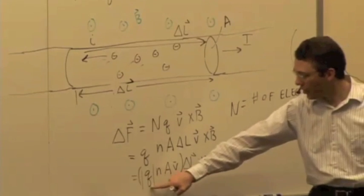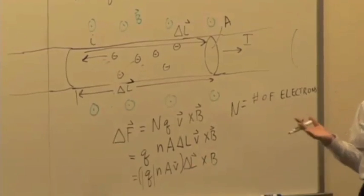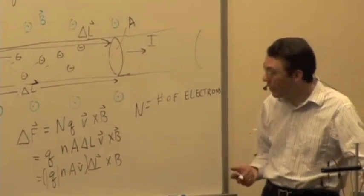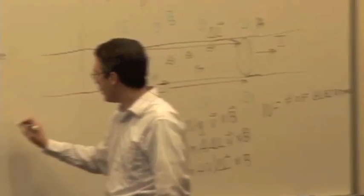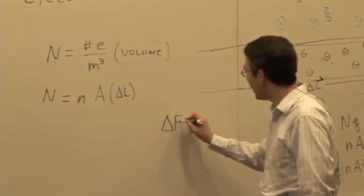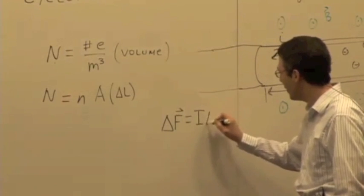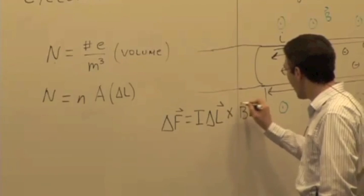What is the charge times N times A times the drift speed? That's what? That's the current. That's the conventional current, right? So we could also write this expression or this relationship between magnetic forces and moving charges in terms of the current and say that delta F is equal to I delta L cross B.